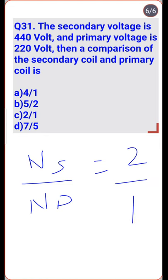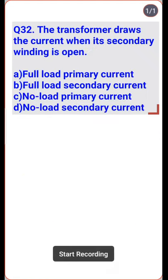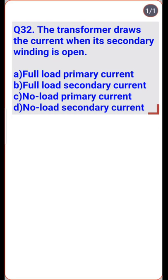A transformer draws no-load primary current when its secondary winding is open — so option C is correct.